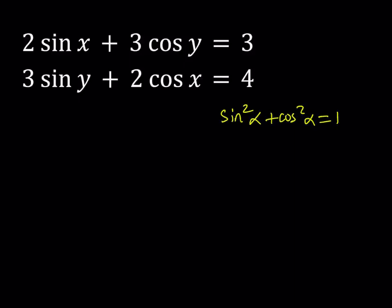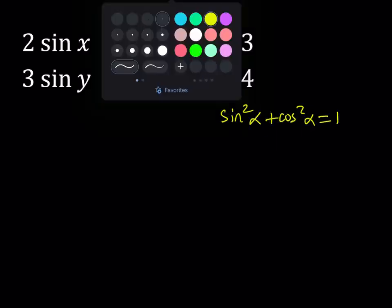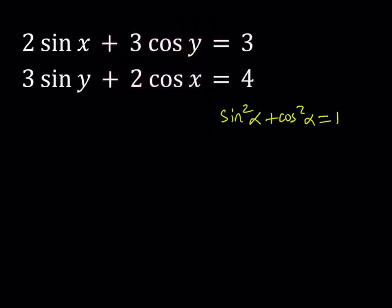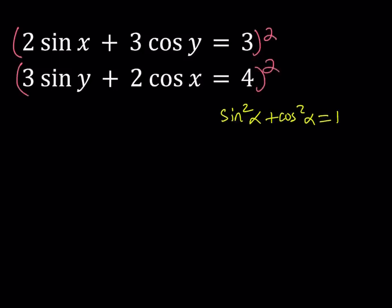But let's go ahead and use this to our advantage. Now, for this purpose, since I do see that I have here 2 sine x and 2 cosine x, they have the same coefficients, and sine y and cosine y have the same coefficients. To take advantage of the Pythagorean identity, I would like to go ahead and square both sides of each equation and then see what happens from there.